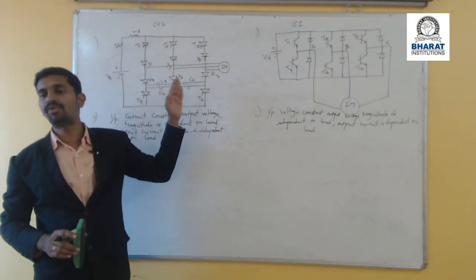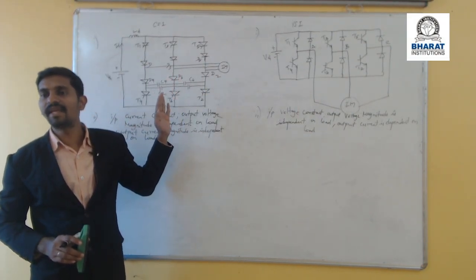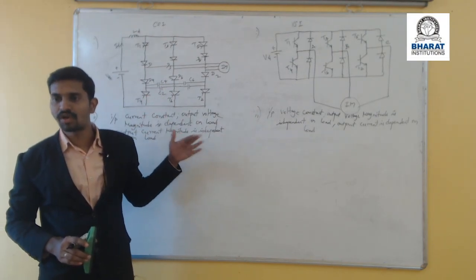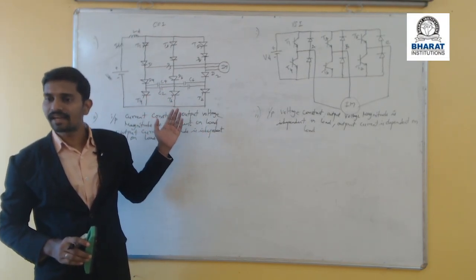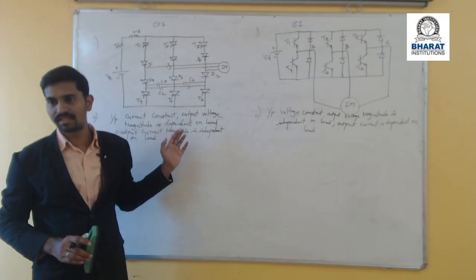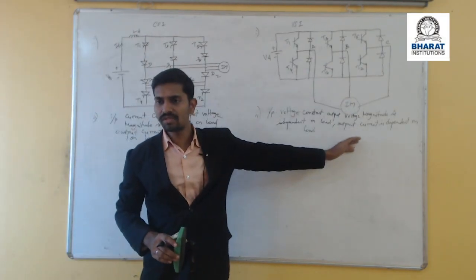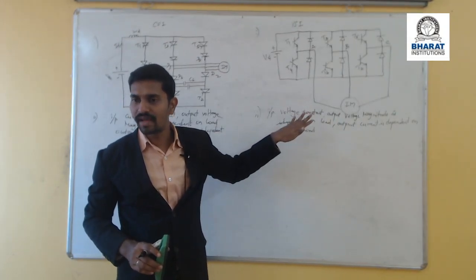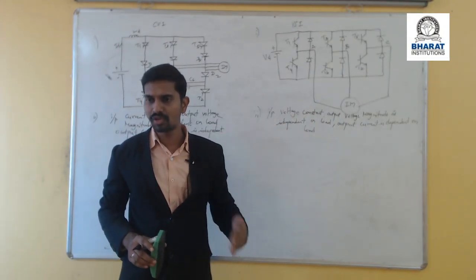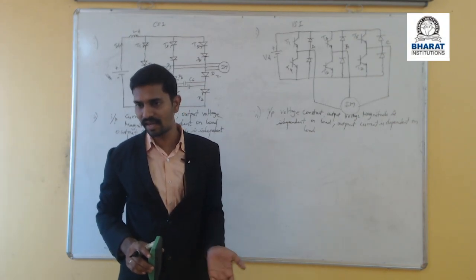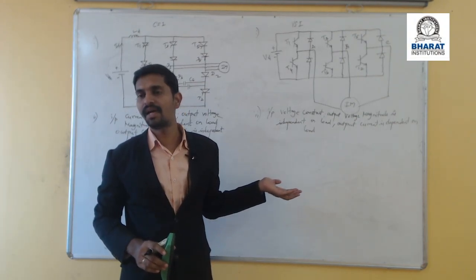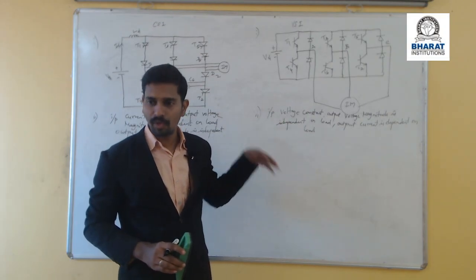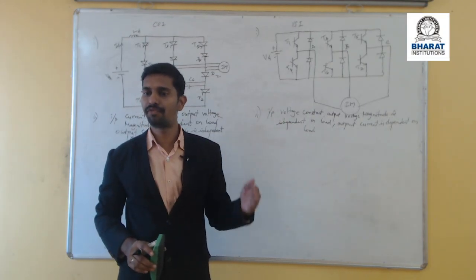Because of this input inductance in CSI, the circuit is protected, so no extra fuse or switching devices are required. But in voltage source inverters, there is no input inductance, so we require fuses or protecting devices to protect the device from high current or any fault.